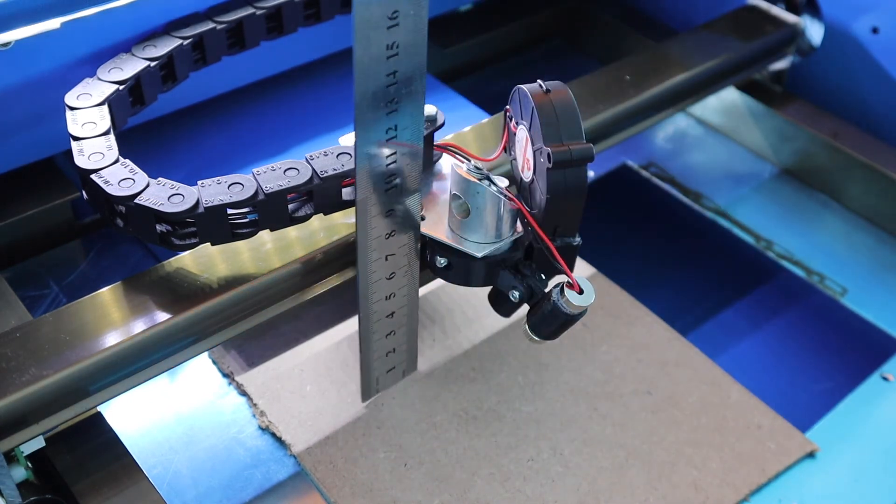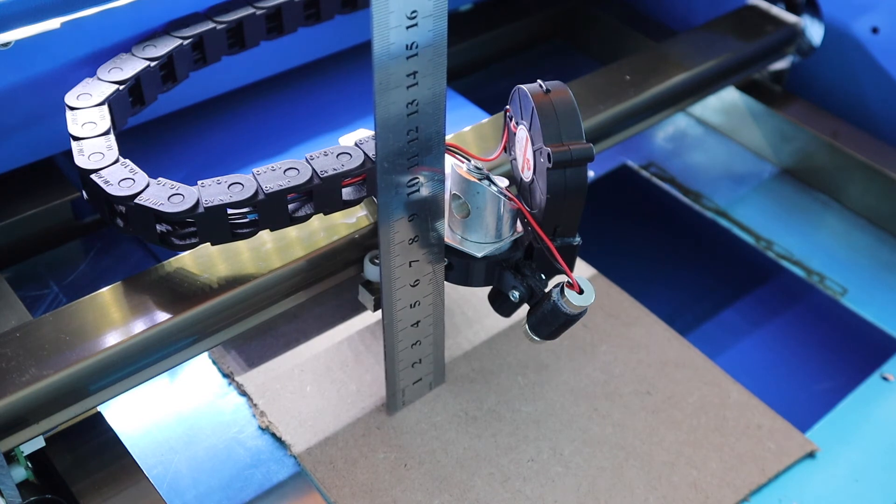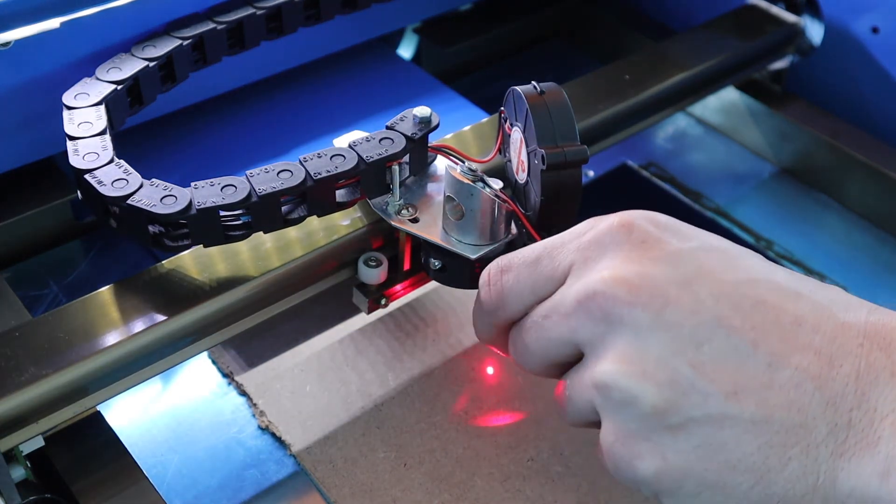Make sure that the piece is at the correct focal point for your lens. Most stock K40s come with a 50.8mm focal point lens. Now turn the pointer on and adjust the focus ring until a small focus dot is made.